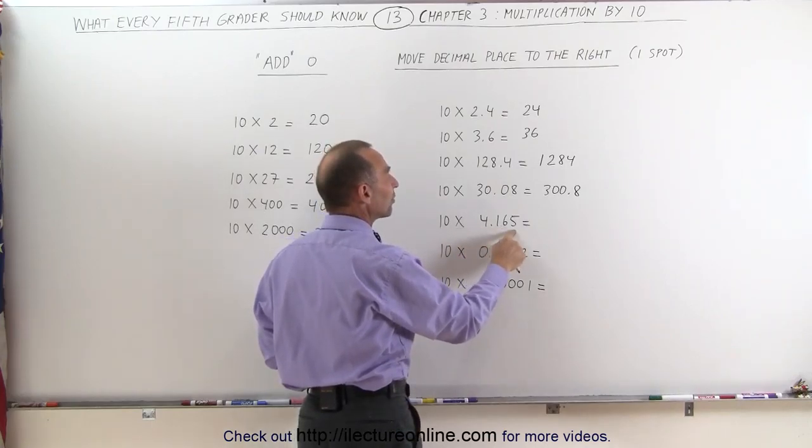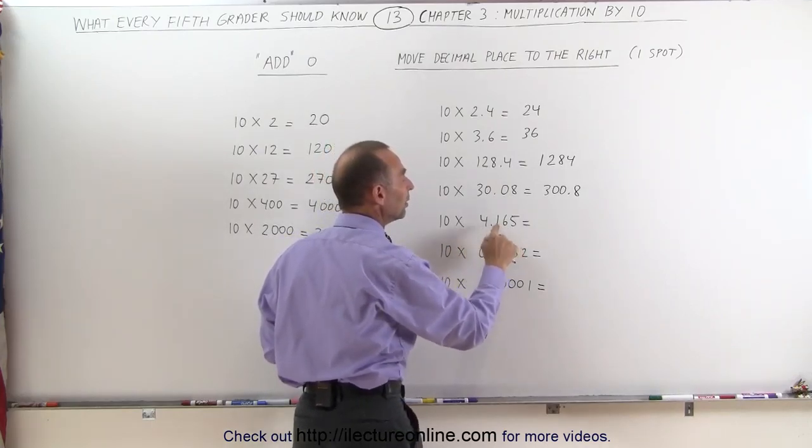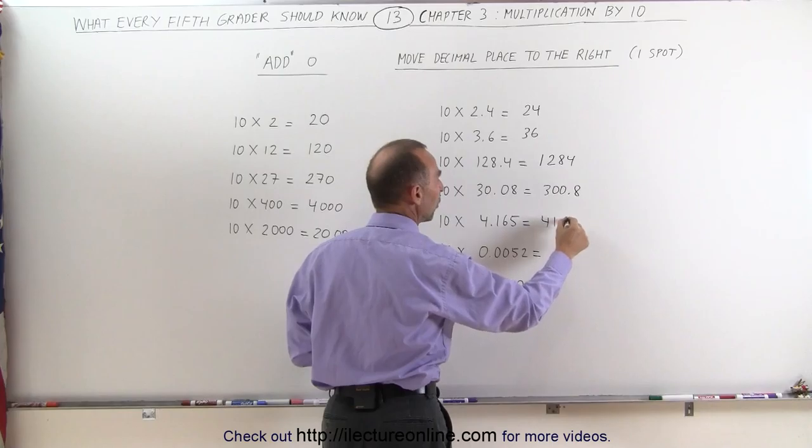10 times 4.165, move the decimal place over one, you get 41.65.